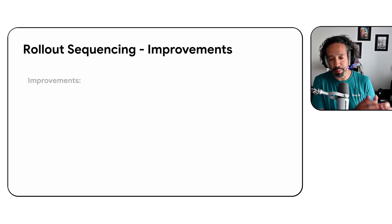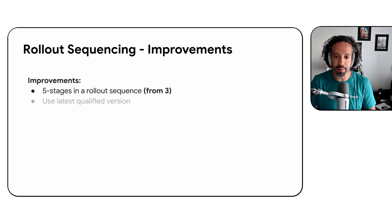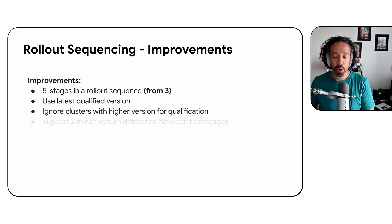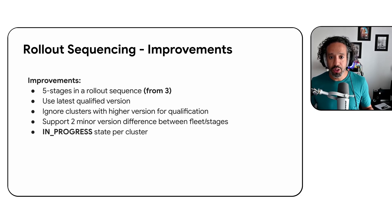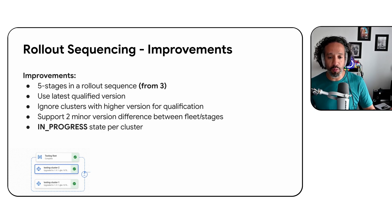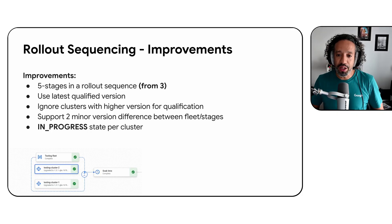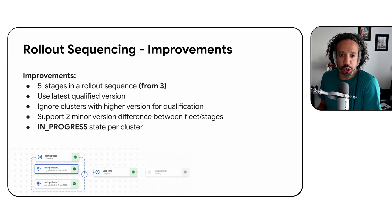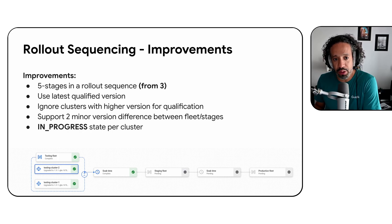Next in our upgrade enhancements is rollout sequencing improvements. Rollout sequencing is a feature that allows you to define stages in which you want your clusters to be rolled out or upgraded — for example, upgrading dev before QA, and QA before production. We now add two more stages, so you can create a sequence with five stages instead of three. We also support using the latest qualified version for subsequent stages, ignoring clusters with a higher version for qualification, and supporting a two minor version difference between fleets.